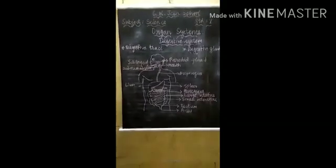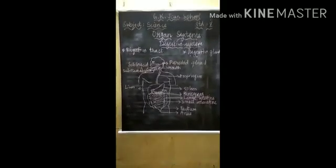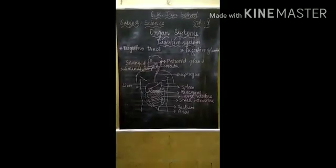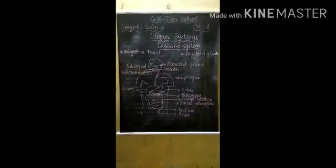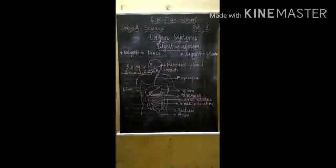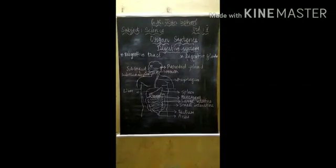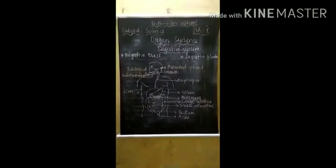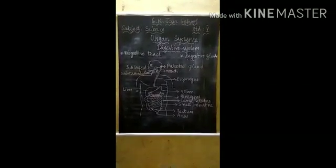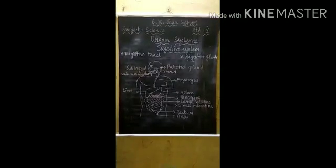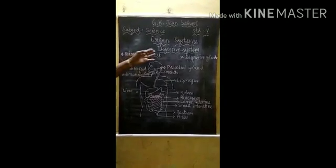These processes are carried out by the different organs in our body. Now we are going to see the different types of organs and the organ systems in our body and their function. Let us go into the digestive system.